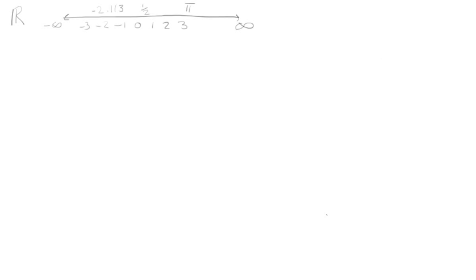Now, if we wanted to draw a vector on the number line, we would have to say our vector v is equal to some value x. Say the value we chose is 2 — this could be any number. So we can start at 0 and draw our vector here, so our vector v is equal to 2. You'll remember from high school that a vector is just anything with a direction and a length. Here our length is 2 and we're going in the positive direction. So we can describe any vector in the set of real numbers with just one variable, x.